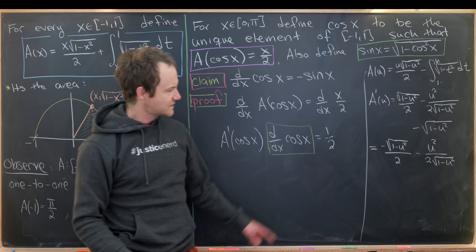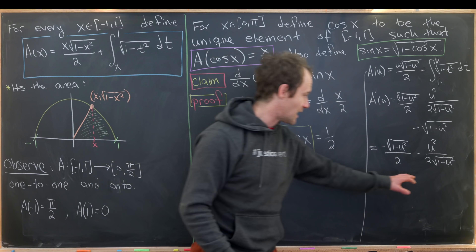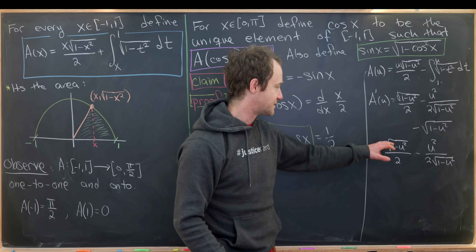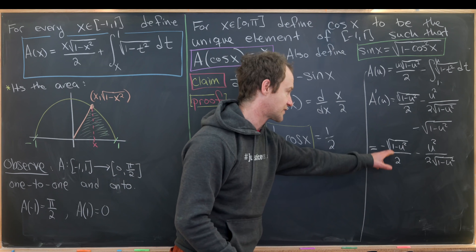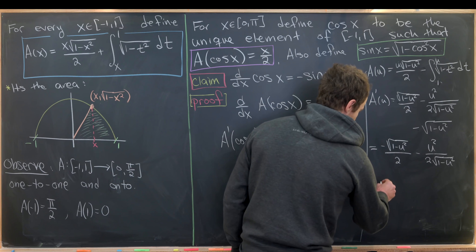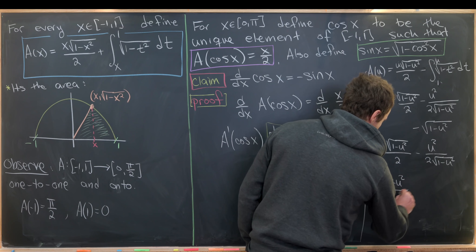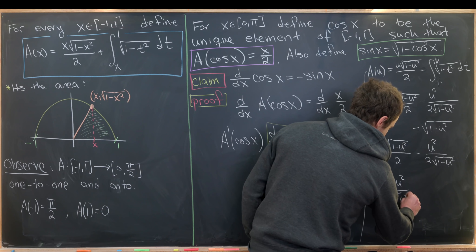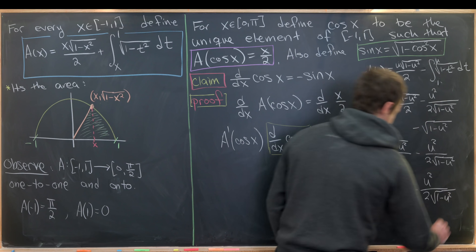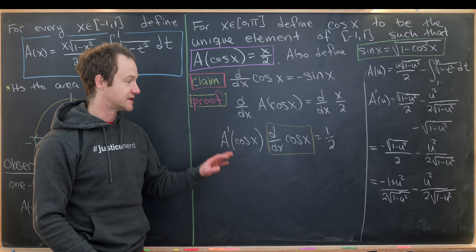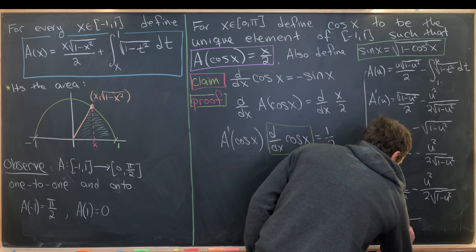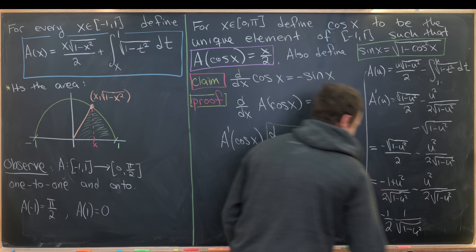Finding a common denominator of two times sqrt(1 minus u squared), the first term becomes minus(1 minus u squared) and the second remains minus u squared. Combining these, the u squared terms cancel, leaving A prime of u equals negative one half times one over sqrt(1 minus u squared).